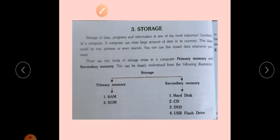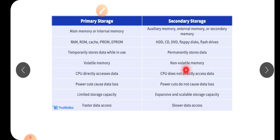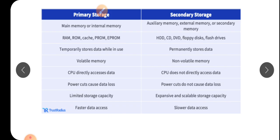Let's see the difference between primary storage and secondary storage — this is extra information not in your textbook. Primary memory is also called main memory or internal memory, meaning RAM and ROM are both inside the computer. Secondary storage is also called auxiliary memory or external memory — it is the secondary part, and we also call it secondary memory.